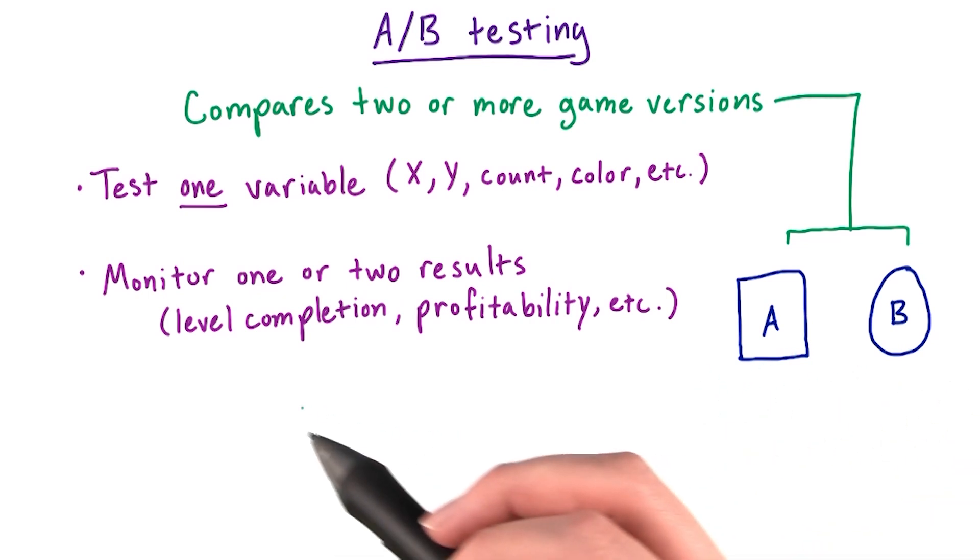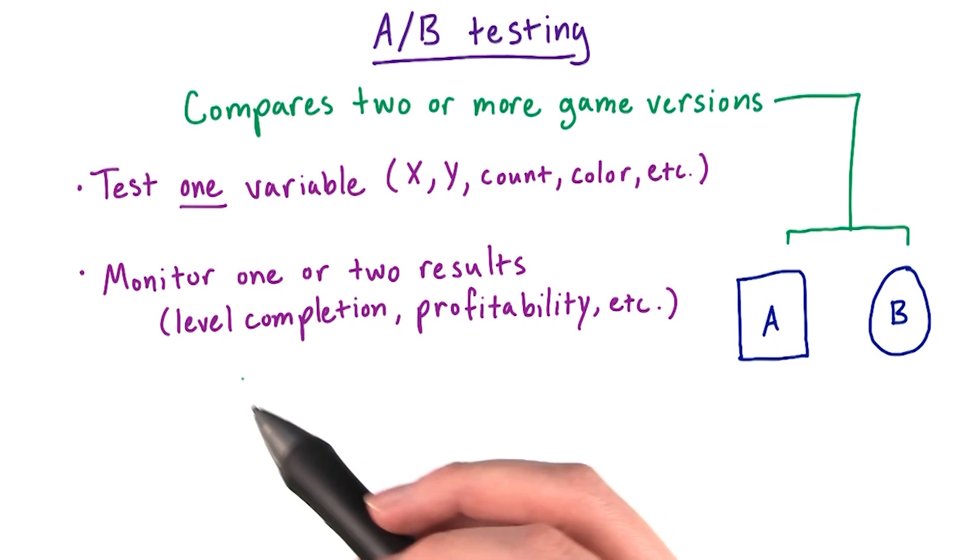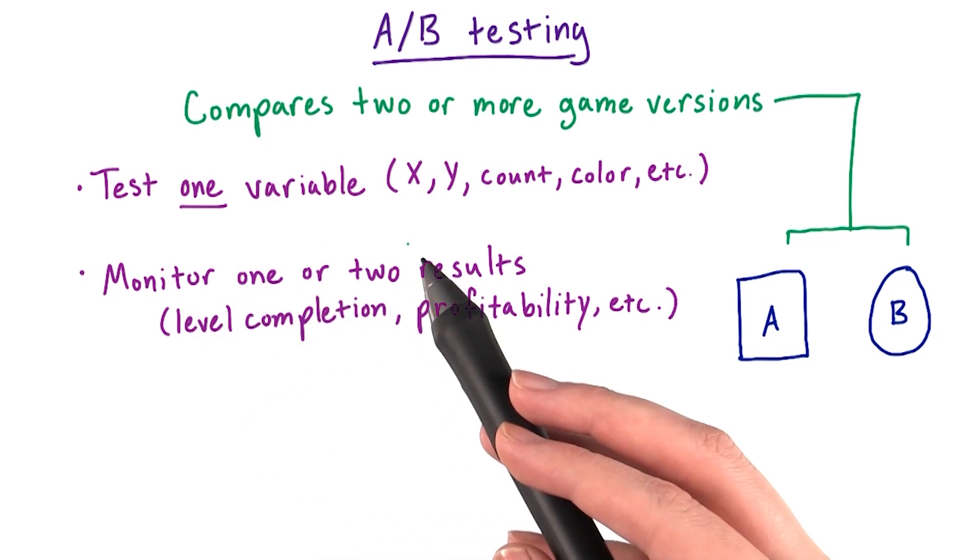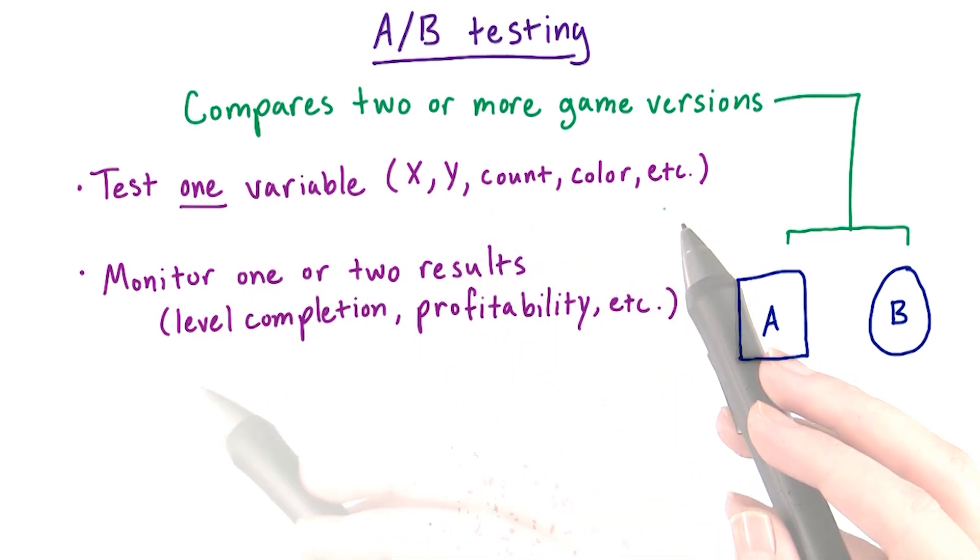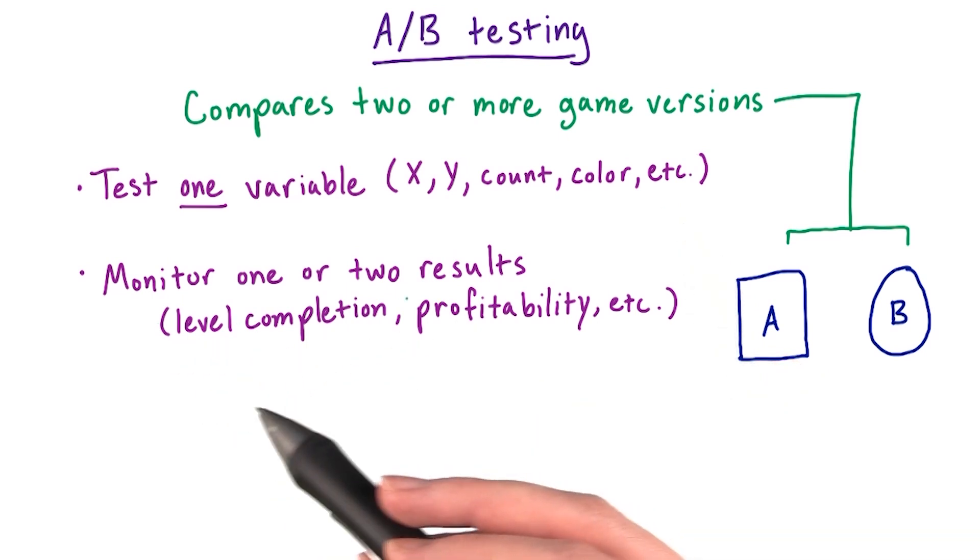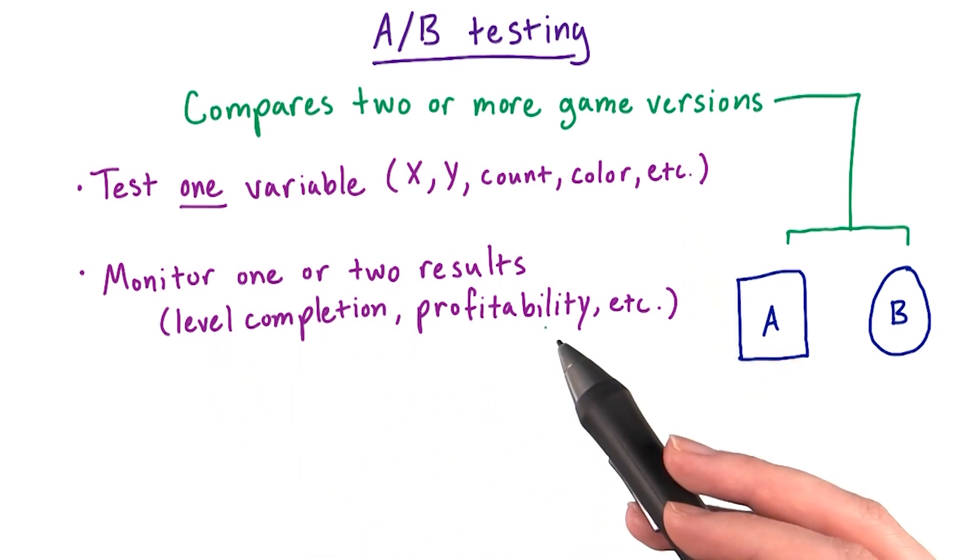The most effective A-B testing scenarios are designed to test out one main variable, x, y, count, color, etc. And they monitor one or two results, like level completion or profitability, things like that.